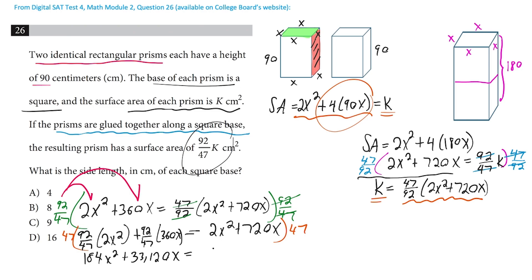And on the right-hand side, since we multiply by 47, when we distribute here, we're going to get 94. And here, we're going to get 33,840. Welcome to the digital SAT, guys. So 94x squared plus 33,840x.